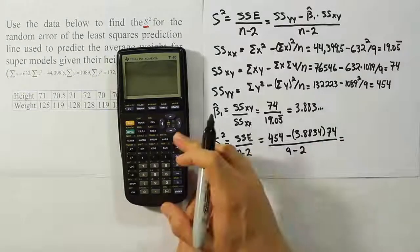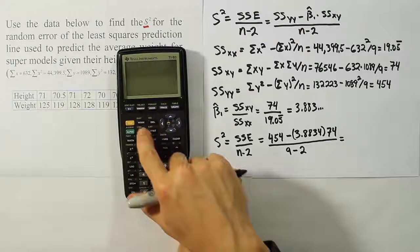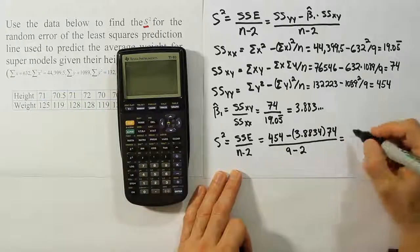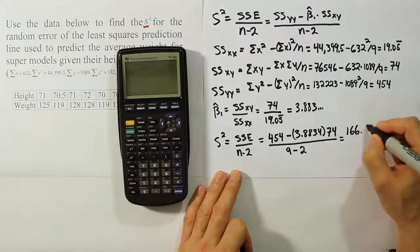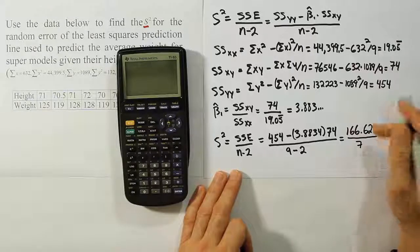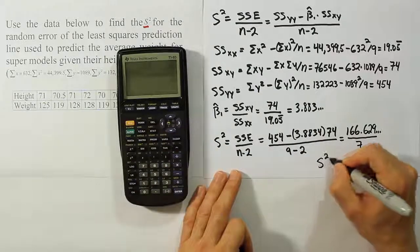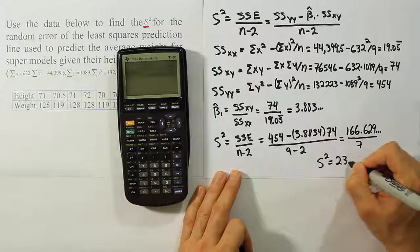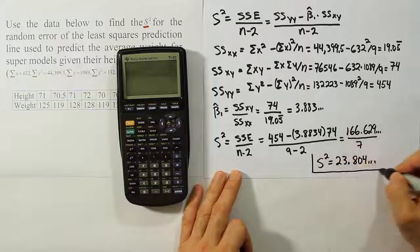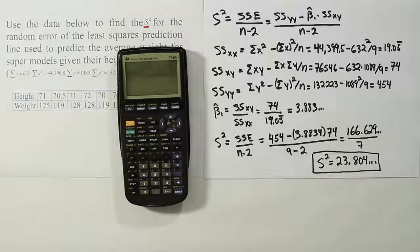Let's work out all that and see what it turns out to be. So I have 454 minus the slope times 74, hit enter, I get 166.629 dot dot dot, all over 7. So divide that by 7 and we get the answer 23. So S squared is equal to 23.804 dot dot dot, on and on and on. So the variance for the random error term is 23.804 so on and so forth.